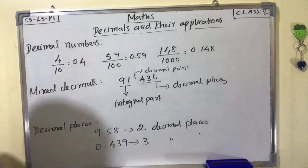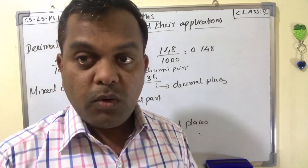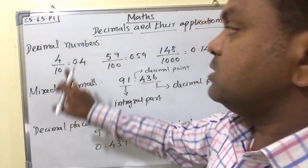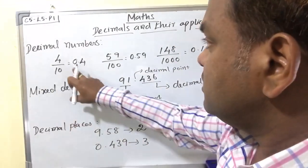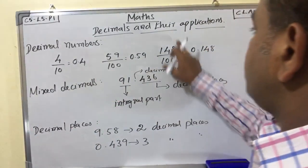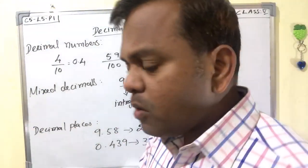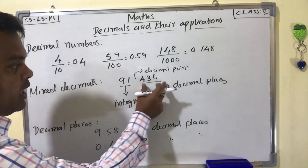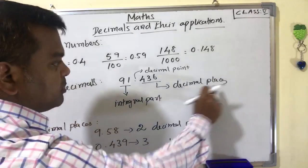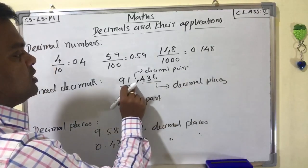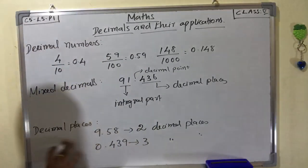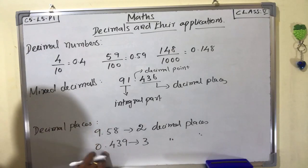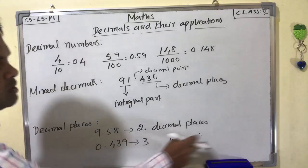So, to summarize: decimal numbers are the values of fractions with denominators 10, 100, 1000 and so on. For example, 0.4, 0.59, 0.148. Mixed numbers contain a whole number and a decimal part; the whole number is the integral part, and the digits after the decimal point are the decimal places. For example, 9.58 has two decimal places; 0.439 has three decimal places.